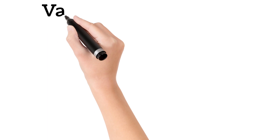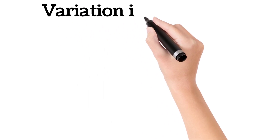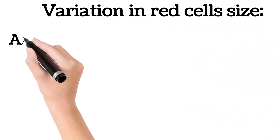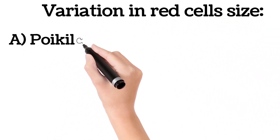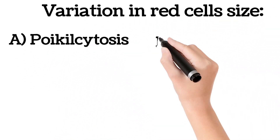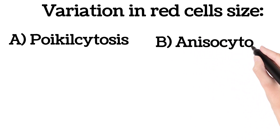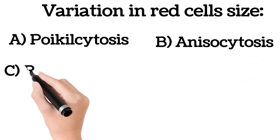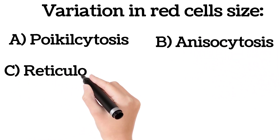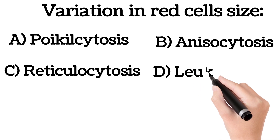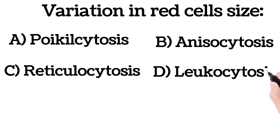Variation in red cell size: A. Poikilocytosis, B. Anisocytosis, C. Reticulocytosis, D. Leukocytosis.